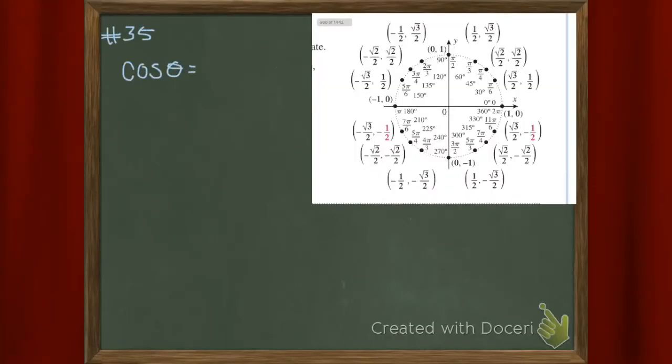So here we're working this unit circle backwards. They gave us the cosine of theta is root 3 over 2, and they want to know all of the thetas in 0 to 2 pi that make the cosine root 3 over 2.